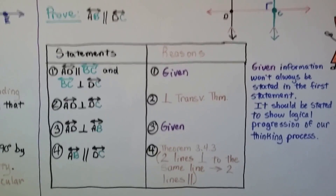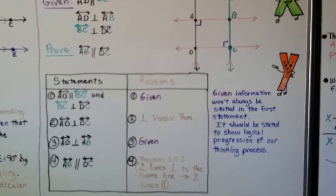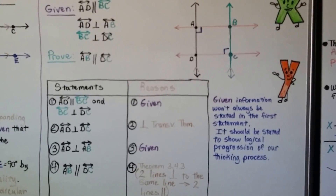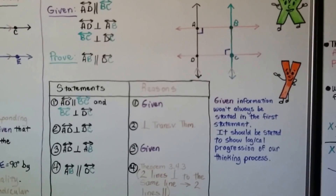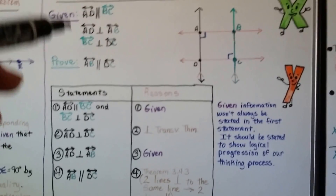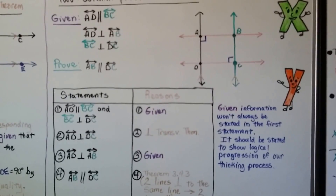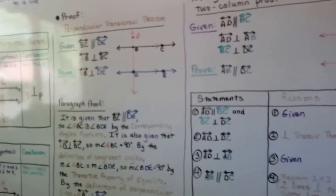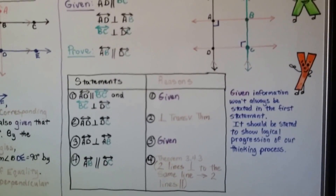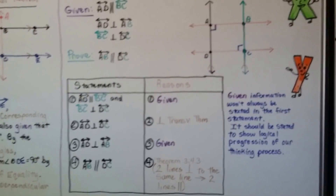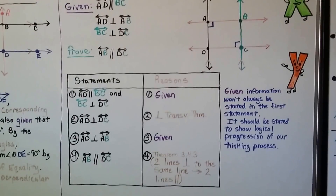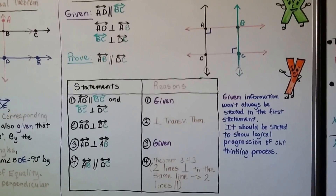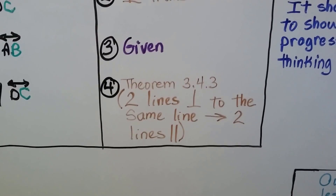Here are our statements and reasons. Statement 1: line AD is parallel to BC, and BC is perpendicular to DC — that's given. Statement 2: the black line AD is perpendicular to line DC, by the Perpendicular Transversal Theorem. Statement 3: the black line AD is perpendicular to line AB — that's the second part of our given. Statement 4: line AB is parallel to line DC, by theorem 3.4.3.